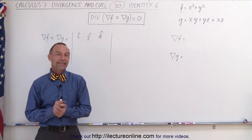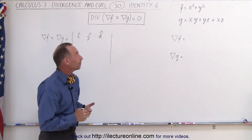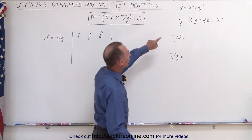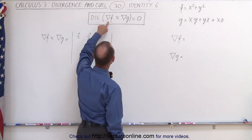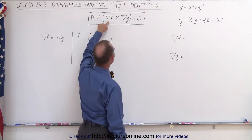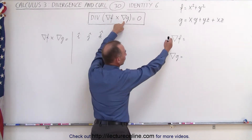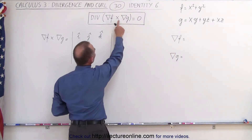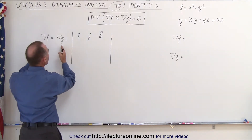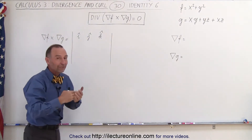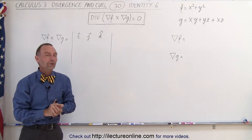Welcome to ElectronLine. Here we have an interesting identity. If we have two scalar functions f and g, and we take the gradient of f and then the gradient of g, and then we find the cross product and take the divergence of that result, it should always equal zero.